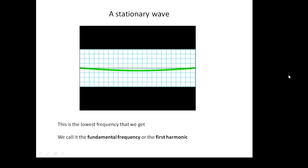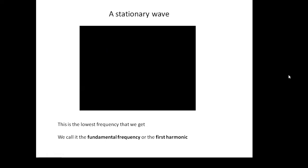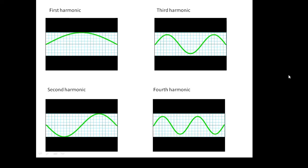Basically the string goes up and down like this. This is called the fundamental frequency or the first harmonic, and it's a single loop. Notice that the string is moving up and down. We've got the first harmonic which is a single loop, below that the second harmonic which is two loops, then the third harmonic which is three loops, and the fourth harmonic which is four loops. These are stationary wave patterns.